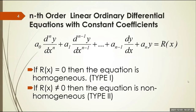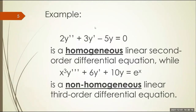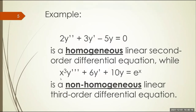For today's lesson, we will only be discussing type number one. For example, 2y double prime plus 3y prime minus 5y equals zero is a homogeneous, linear, second order differential equation with constant coefficients. The second example is a third order, non-homogeneous, linear differential equation with variable coefficients.